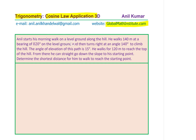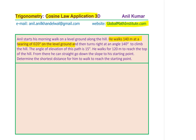It says that Anil starts his morning walk on a level ground along the hill — so the hill is on the side. He walks 140 meters at a bearing of 020 degrees on the level ground. Bearing angles are measured from north, and they are written in three digits — it's 020, not just 20 degrees. So the angle from north is 20 degrees.